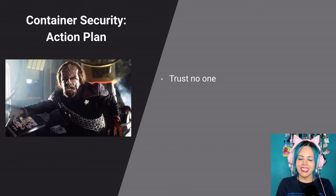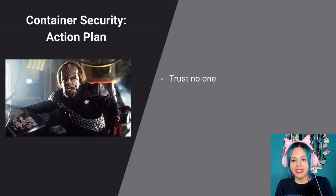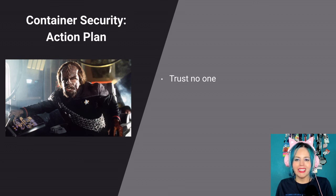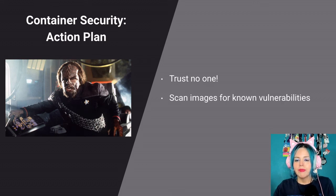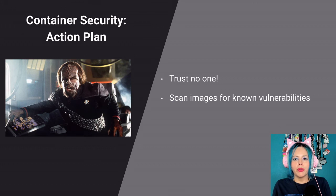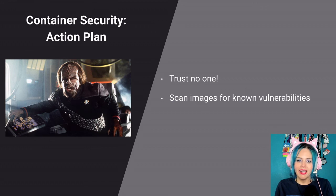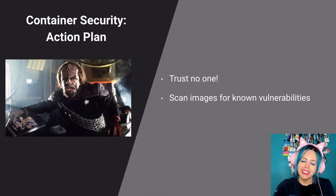First: trust no one. It comes back to trust but verify. It doesn't have to be maliciousness or an insider threat — we're human, we make mistakes, we can't assume everything is perfect from day one. If you think you're fine, go google data breaches and ask where that inherent trust broke down. Also: scan your images for known vulnerabilities. Even seven percent detection meant some found it. Pre-runtime scanning and network tools are important — they just can't be the only things you rely on.